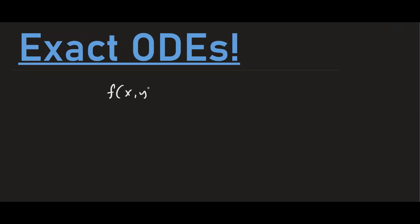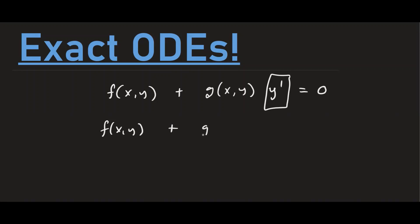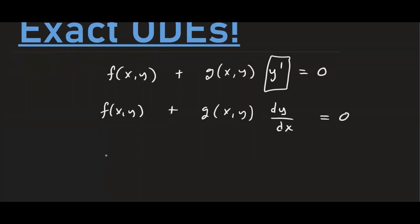Let's talk about exact ODEs. A exact first-order differential equation appears in this form: you have some function f of x,y plus another function g of x,y times y prime equal to zero. You can rewrite the derivative as dy/dx, so f(x,y) plus g(x,y) dy/dx equals zero. Then multiply both sides by dx to get f(x,y) dx plus g(x,y) dy equals zero.